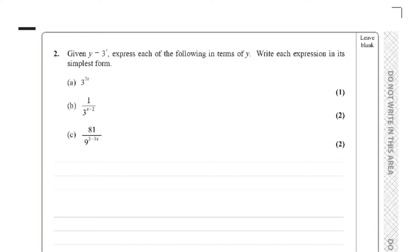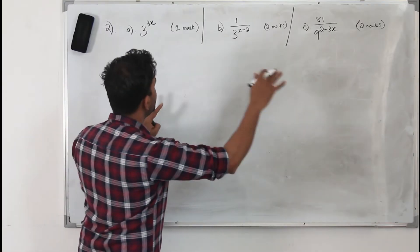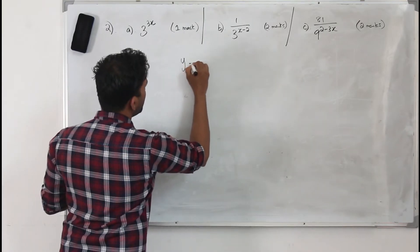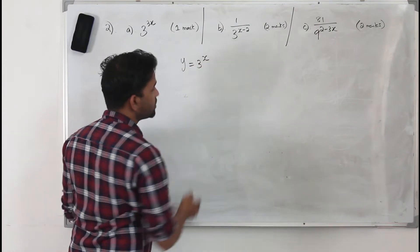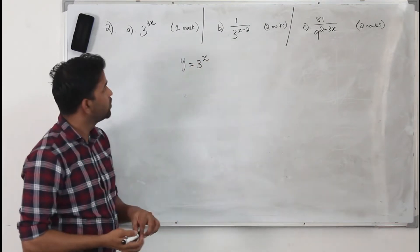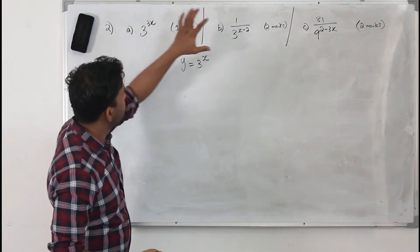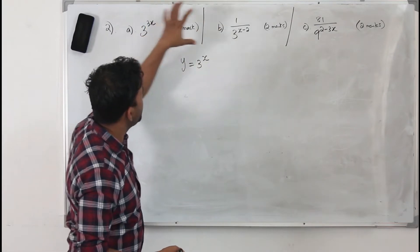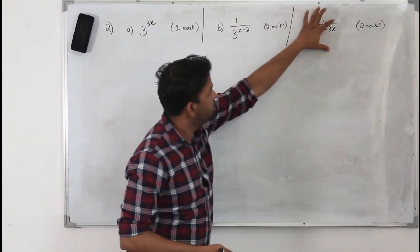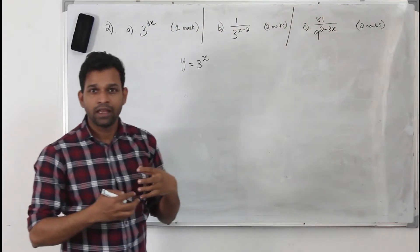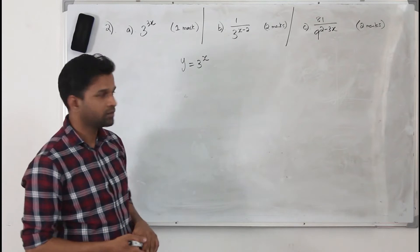We have three parts: part a, part b, and part c. This is question number 2 and we are given y equals 3 to the power x. They want you to write all of part a, part b, and part c expressions in terms of y.